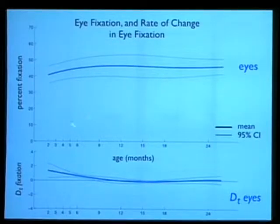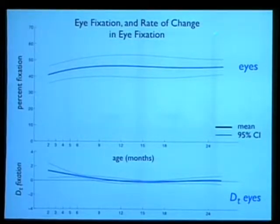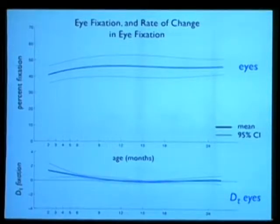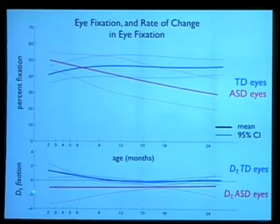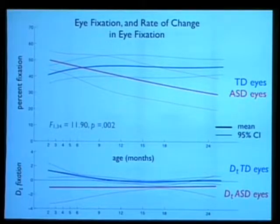Those curves are very interesting, but this is even more interesting. This is the first derivative of those curves — the rate of change. Not only what they are doing, but how much they are changing from time to time. It denotes a milestone they are about to achieve, that they are working towards. This is for the typical children, and this is for the children with autism. You see the rate of change is always going to be negative, creating almost a separation between those two distributions. A functional ANOVA finds that those two curves are significantly different.